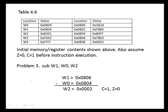Problems 1 through 34 give individual instructions and ask you to identify affected memory locations and register contents after the instruction has been executed. They also want you to give new values for the carry and zero flags after execution. Table 4.6 gives initial memory and register contents, and says to assume the zero flag is 0 and the carry flag is 1 before the instruction is executed.